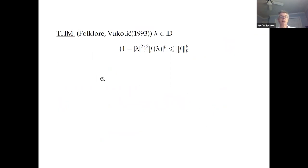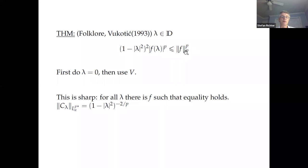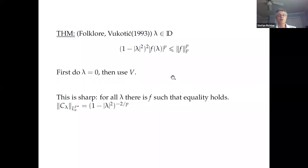With this you immediately get a pointwise estimate for growth of functions in Bergman spaces. The folklore estimate: (1 - |λ|²)^2 |f(λ)|^p ≤ ||f||^p_{LpA}. The sharp version is Vukotic's observation. You prove it first for λ equals 0 using integral means, then apply the isometry V_{p,λ}. It's sharp because equality holds for λ equals 0, and since we transported the estimate isometrically, there's always a function where equality holds.